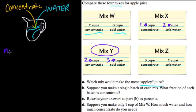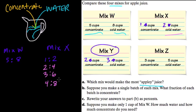First, I like to compare mix W to mix X. Now mix W is 5 to 8 and mix X is 1 to 2. If I kind of scale mix X up to match mix W, in other words I'm going to use the same number of cups of cold water, I would make 4 batches of mix X. So if I doubled it I would get 2 to 4, if I tripled it I would get 3 to 6, one more step and I get 4 to 8.